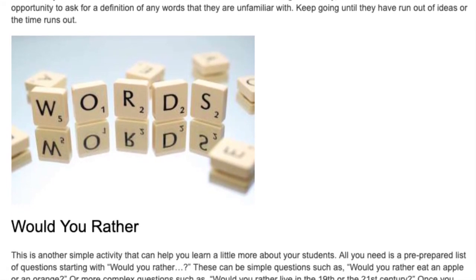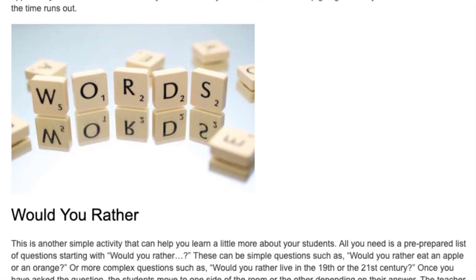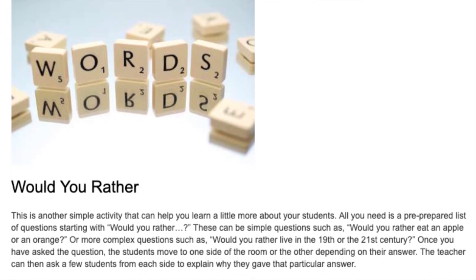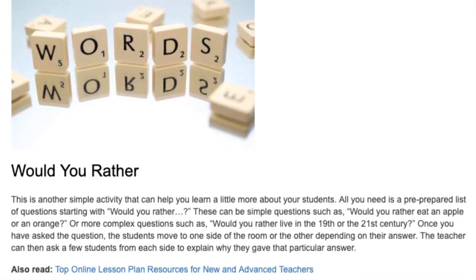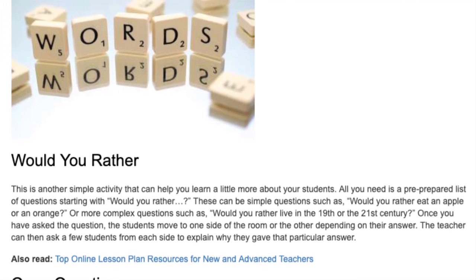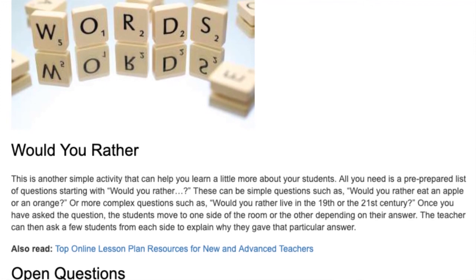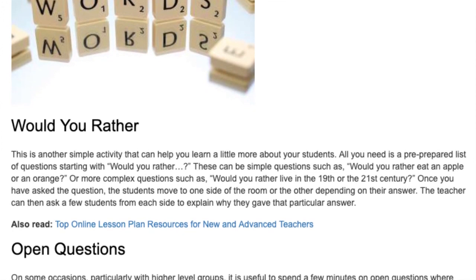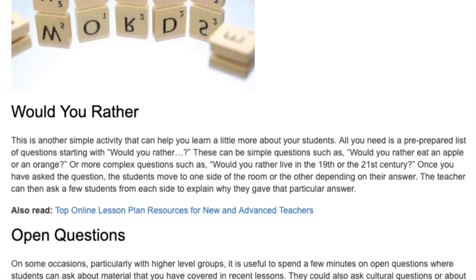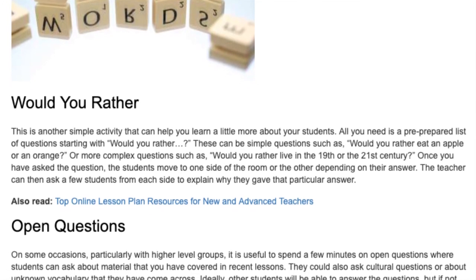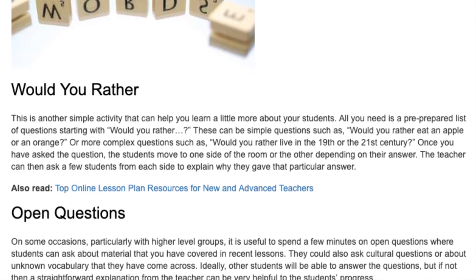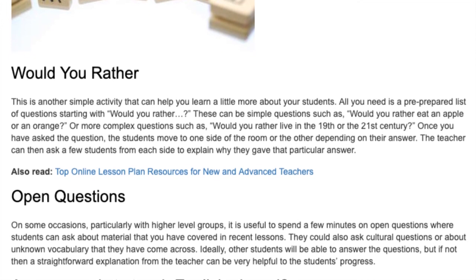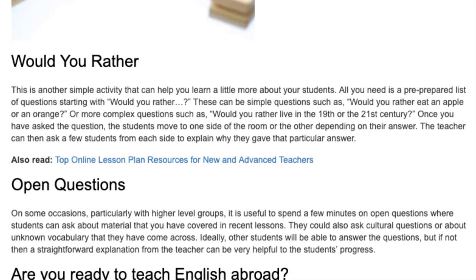Would You Rather? This simple activity can help you learn a little more about your students. All you need is a pre-prepared list of questions starting with 'would you rather.' These can be simple, such as 'Would you rather eat an apple or an orange?' or more complex, such as 'Would you rather live in the 19th or the 21st century?' Once you have asked the question, students move to one side of the room or the other depending on their answer. The teacher can then ask a few students from each side to explain why they gave that particular answer.